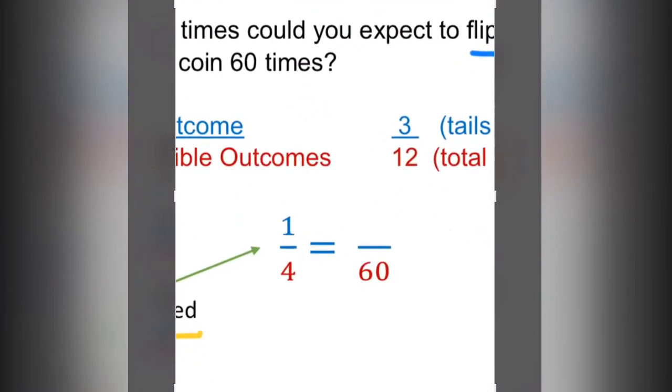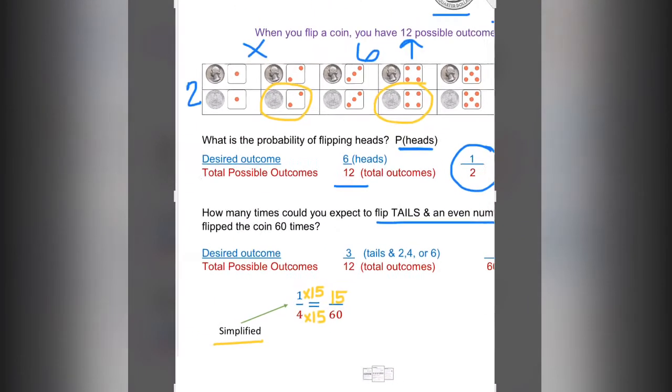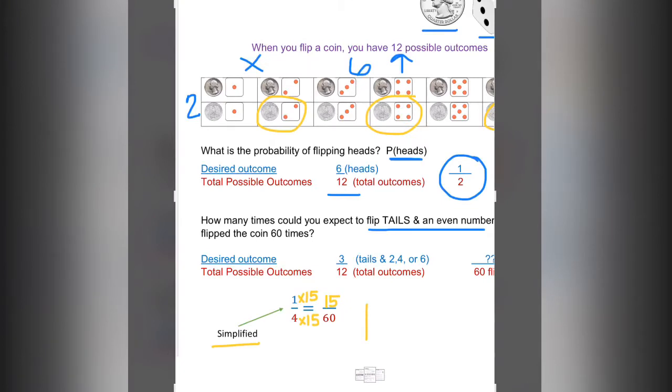We're going to solve this proportion to figure out what would happen if we did it 60 times. 4 times 15 gives me 60, and 1 times 15 gives me 15. So I should get tails and an even number 15 times if I do this 60 different times. 15 out of 60.